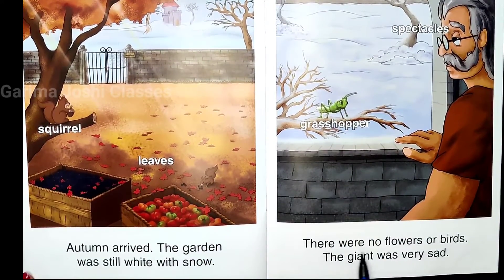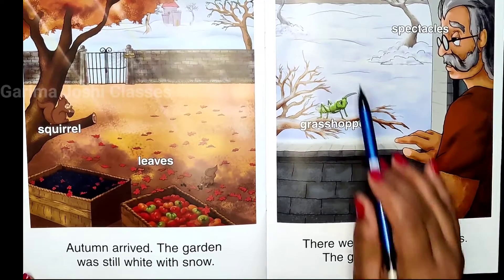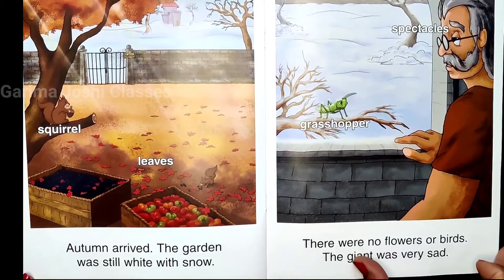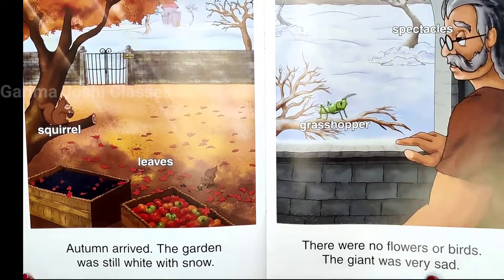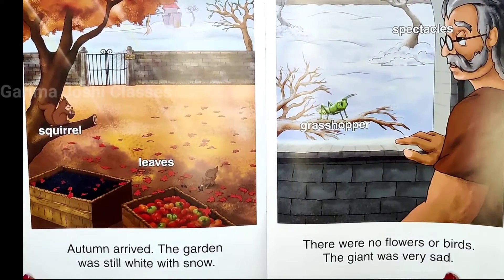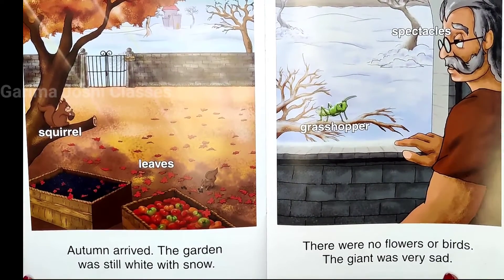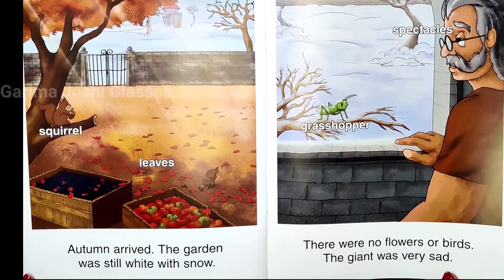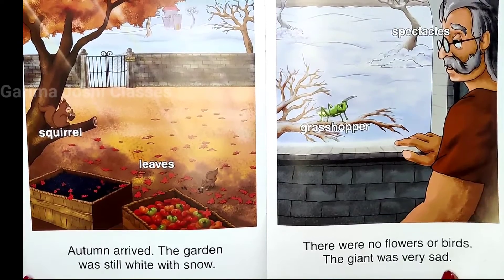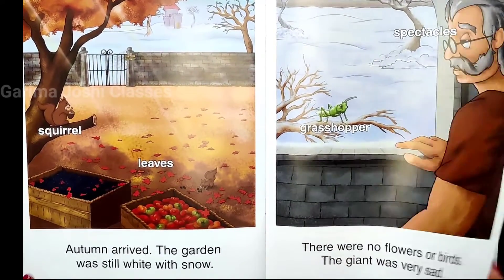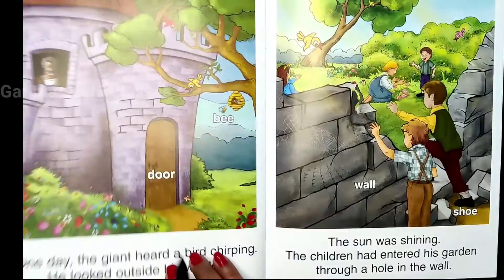There were no flowers or birds in the giant's garden. The giant became very sad. All around outside, flowers and leaves were there, but in his garden only snow remained, and so he was very sad.